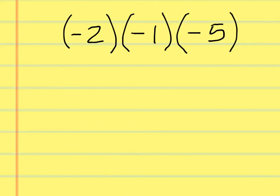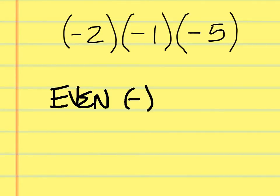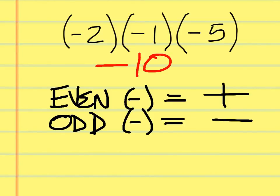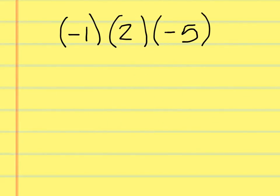When you have a problem with more than two items, here are the rules for the signs: if you have an even number of negative signs, the answer is positive; if you have an odd number of negative signs, the answer is negative. The sign of this answer is negative because there are three negative signs — three is an odd number, so it's negative. The full answer is negative 10. The next problem is just 10, because we have two negative signs — that's an even number, so it's positive.